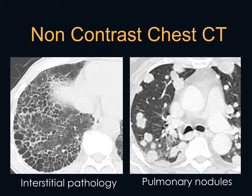Let's move into image analysis. I want to mention non-contrast versus contrast chest CT. As a general concept, we don't really need IV contrast for analysis of the lung parenchyma. You can see examples of a patient with interstitial pathology showing honeycomb pattern — advanced interstitial fibrosis — using lung windows and thin sections. The same applies to pulmonary nodule analysis and pneumonias; we don't usually use contrast for those specific indications.